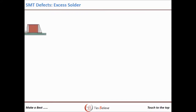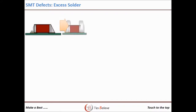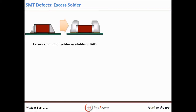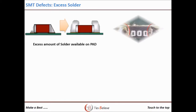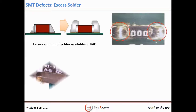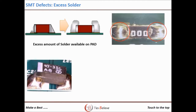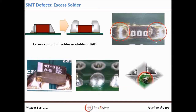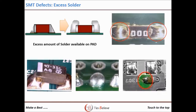Excess solder — as explained, many people think this is not a defect because the extra solder makes the joint stronger. However, in the case of fine pitch IC, excess solder causes the solder shot defect. Excess solder can also create a gap between the PCB and the component.